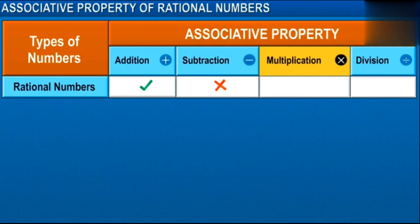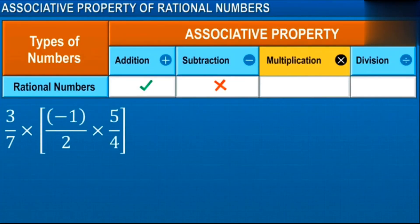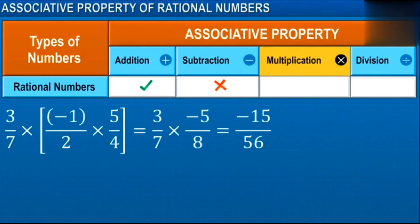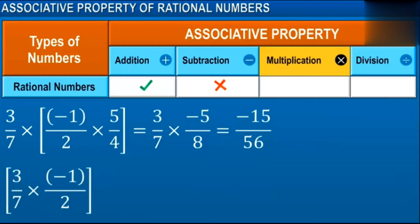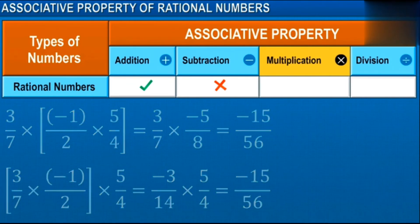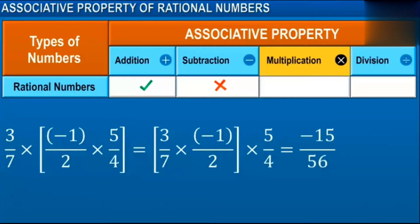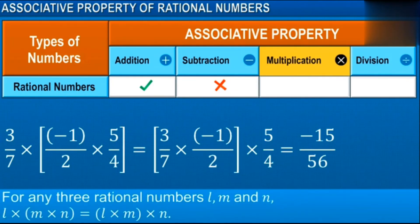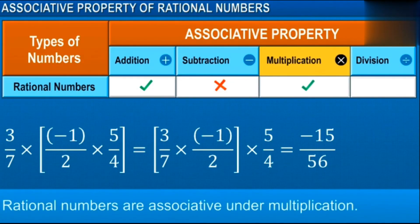What about multiplication? Multiplying the last two numbers first and then multiplying the product with the first number gives minus 15 by 56. Multiplying the first two numbers and then multiplying the product with the last number also gives minus 15 by 56. We see that the results are the same. Therefore, for any three rational numbers L, M, and N, changing the order in which they are multiplied does not affect the result. Hence, rational numbers are associative under multiplication.